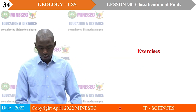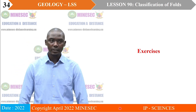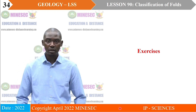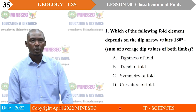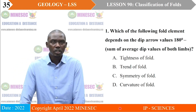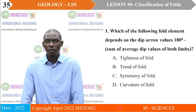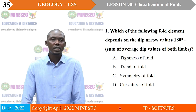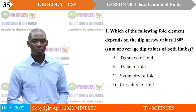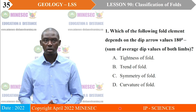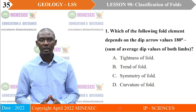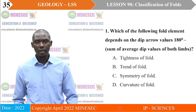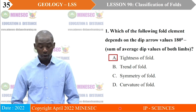We examine exercises to test understanding of lesson 90, Classification of Folds. Exercise 1: Which of the following fold elements depends on the dip arrow values — 180 minus the sum of average dip values on both limbs? A. Tightness. B. Trend. C. Symmetry. D. Curvature. The correct answer is A. This expression is a method of determining inter-limb angle, which tells us whether a fold is gentle, open, tight, or close.